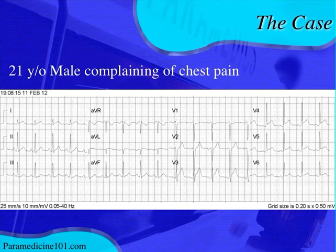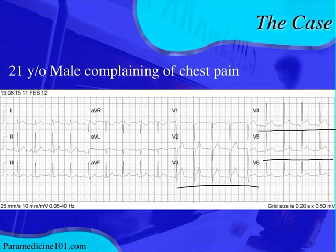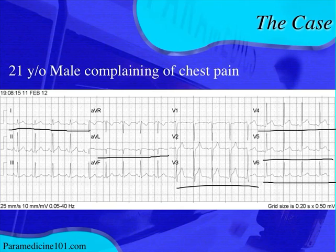Now we're going to look for ST changes — the ST segment and T wave. We do see some: ST elevation in V3 and V4, V5, maybe a little bit in V6, as well as maybe a little bit in lead 1 and AVL. This could be a myocardial infarction pattern, so we have to be concerned. We need to get more information from the patient — an OPQRST, a good SAMPLE history — to determine more what's going on based on their presentation.